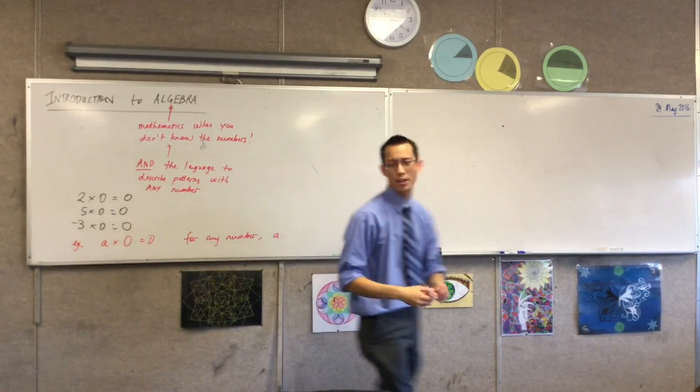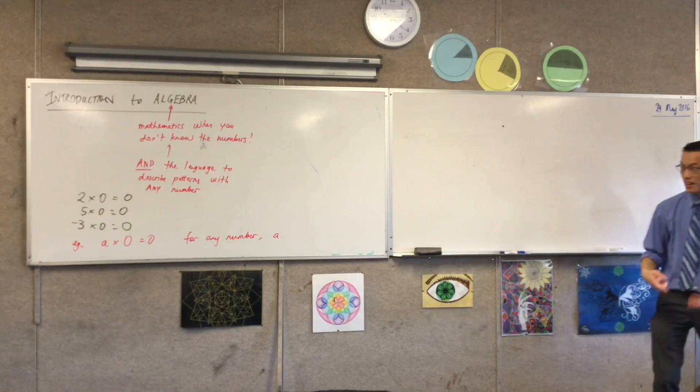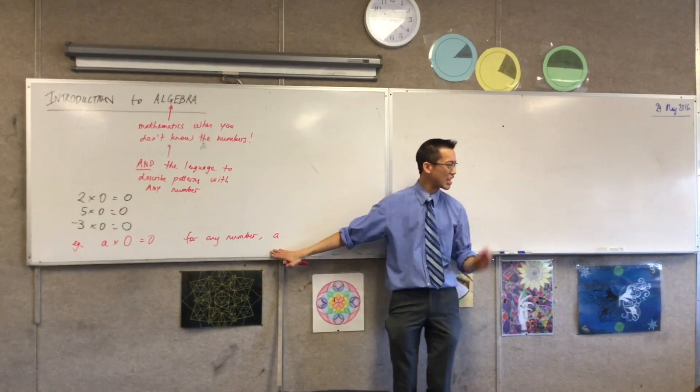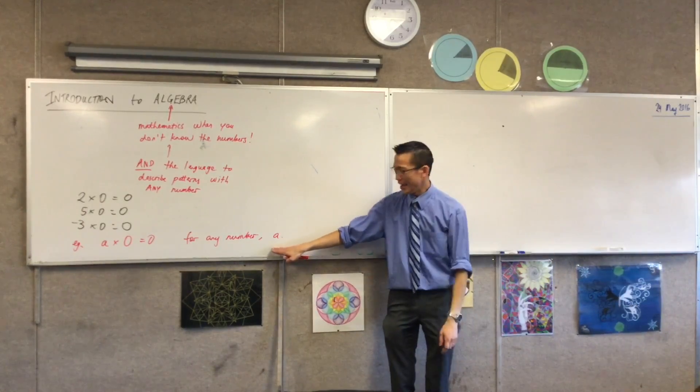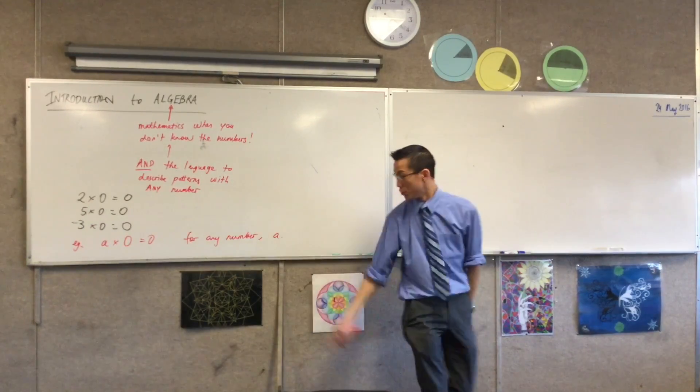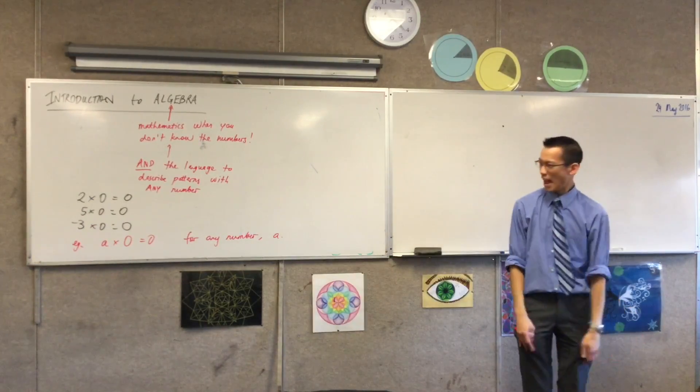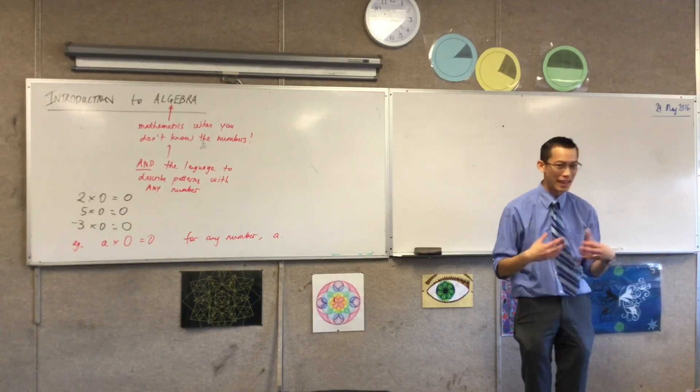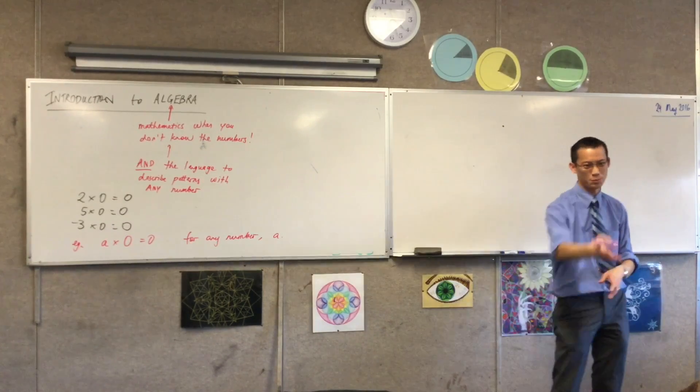So what have I done here? 2, 5, negative 3, they're numbers, but this guy is like a temporary label. It's sort of standing in for an actual number. And you can choose any number you like to be a. a is just kind of like what I'm calling that number at the moment. So I like this word, it's kind of like a label.